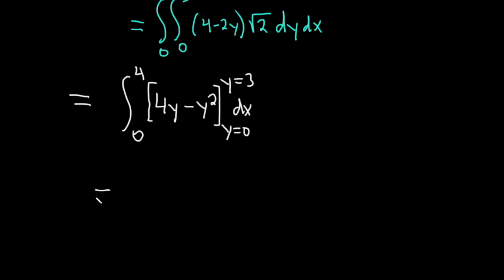This is equal to... So we plug in the 3 first. Oh, I forgot my square root of 2. Easy to mess up, right? So let's go ahead and pull that out. The square root of 2. Integral from 0 to 4. Plugging in the 3, we get 4 times 3 minus 3 squared. Then you subtract and plug in 0, so all of that doesn't matter because it's 0. dx.